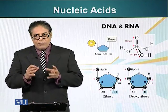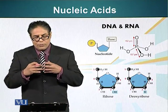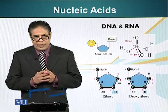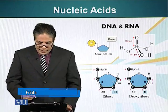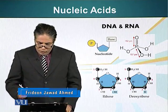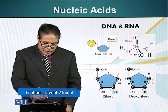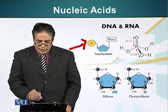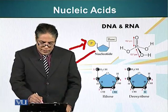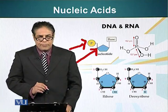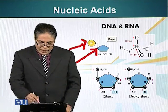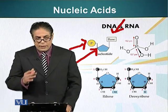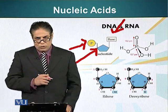The monomer which makes nucleic acids is called the nucleotide. It has three domains. It has a phosphate group — the P in the yellow ball. It has a sugar molecule, a pentose sugar, and a nitrogenous base. Let's look at the structure of these individual components.